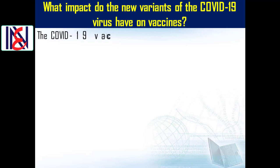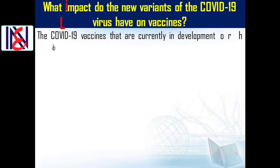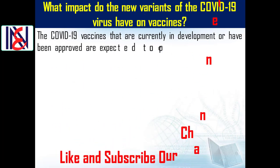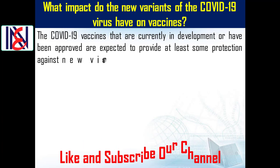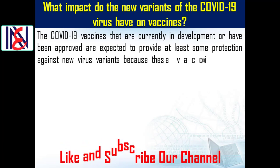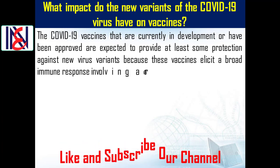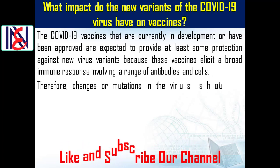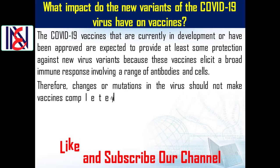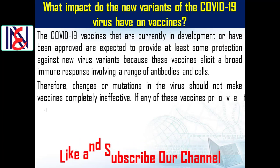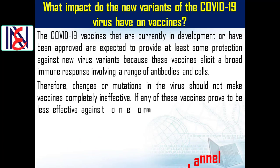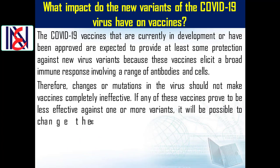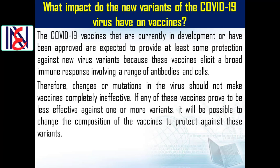The COVID-19 vaccines currently in development or that have been approved are expected to provide at least some protection against new virus variants, because these vaccines elicit a broad immune response involving a range of antibodies and cells. Therefore, changes or mutations in the virus should not make vaccines completely ineffective. If any vaccines prove to be less effective against one or more variants, it will be possible to change the composition of the vaccines to protect against these variants.